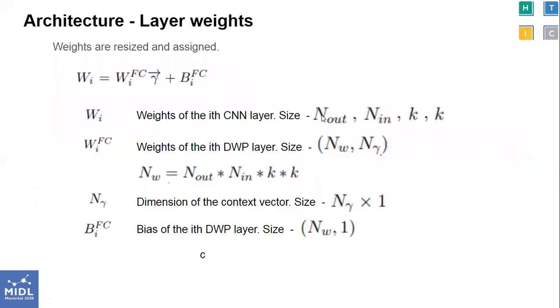At test time, the context-specific weights for the CNN are generated by multiplying the learned weights of the DWP with the context vector and adding the bias values of the DWP.